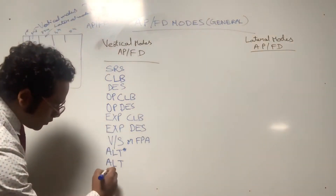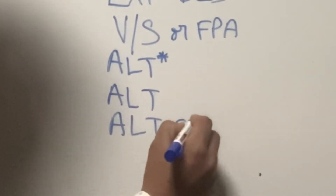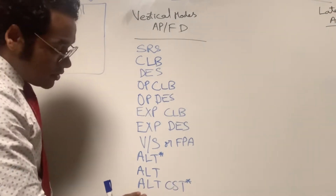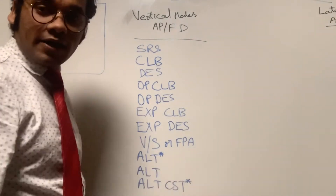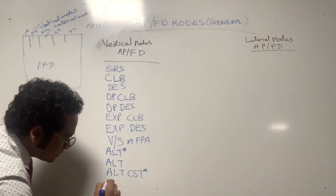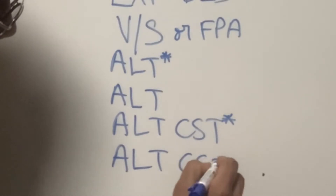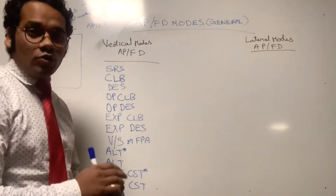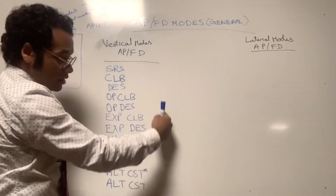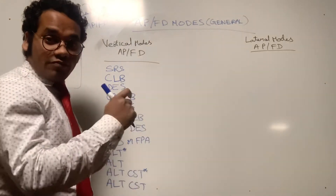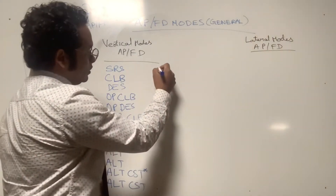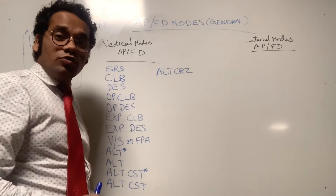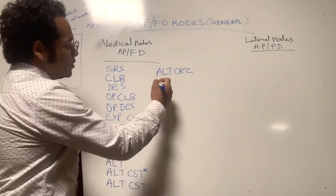ALT simply means altitude hold mode. The next one is ALT CST* — altitude constraint capture mode. Then ALT CST, which is the altitude constraint hold mode. After that, ALT CRZ, which means altitude hold of the cruise flight level.